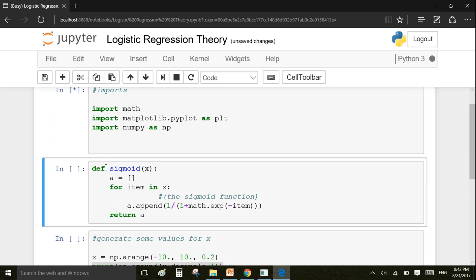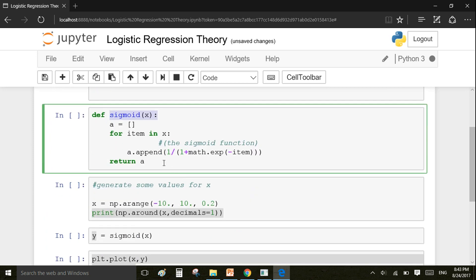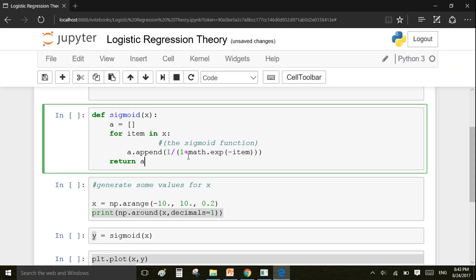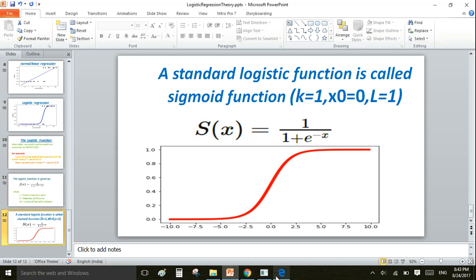I'm going to define my sigmoid function here. It is according to the equation that I have shown you, 1 / (1 + e^(-x)). So I'm doing 1 / (1 + math.exponential(-item)). It's essentially the same as this equation.